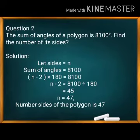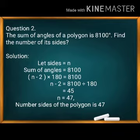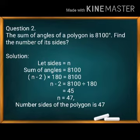Problem 2: The sum of angles of a polygon is 8,100 degrees. Find the number of sides. We don't know N, so using (N−2) × 180 = 8,100, we get N−2 = 8,100 ÷ 180 = 45, so N = 47. The polygon has 47 sides.